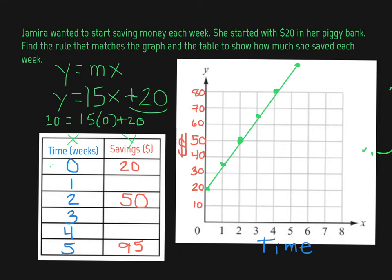Let's erase that. And let's check it for our next data point to make sure that it makes sense. And I'm going to check it for the ones that I have information for both. So I'm going to go down to 2 and 50. So 50 is y, so I'm going to plug in 50 for y. So 50 should be equal to 15 times 2 because 2 is my x value plus my 20.